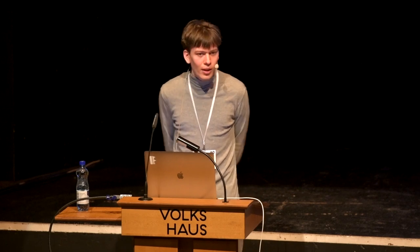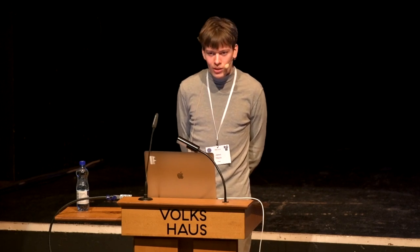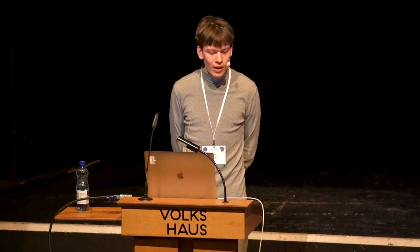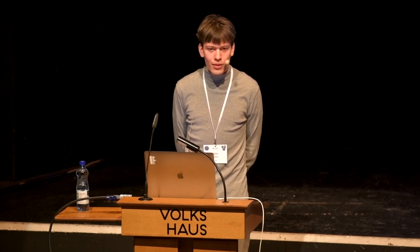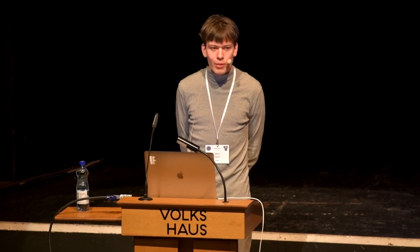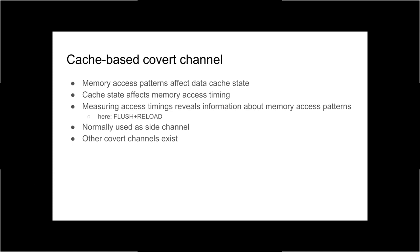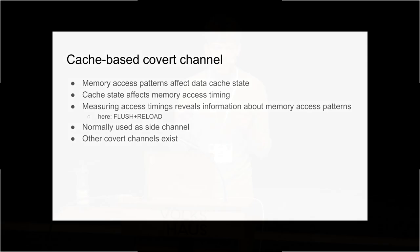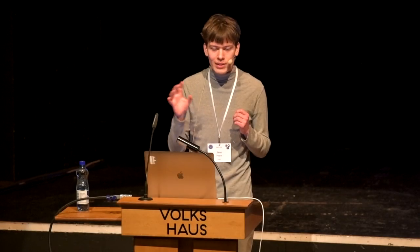Basic recap: there are covert channels in modern CPUs. In particular I'm going to look at the cache-based covert channel — the pattern of memory accesses you perform affects the state of the data cache, and subsequent memory accesses have timing that depends on the cache state. By measuring the timings of memory accesses, you can get information about the memory addresses that were accessed previously.